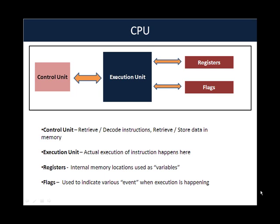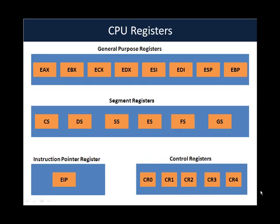Think of registers as internal variables inside the CPU whose values keep changing depending on what the CPU is doing. Finally, we have the flags, which are used to indicate various events when execution happens. For example, the zero flag is set whenever any instruction results in zero — say you add or subtract two numbers and the result is zero, then this flag is appropriately set. Most important from a CPU perspective are the CPU registers, which we will be using for most of our assembly language programming.